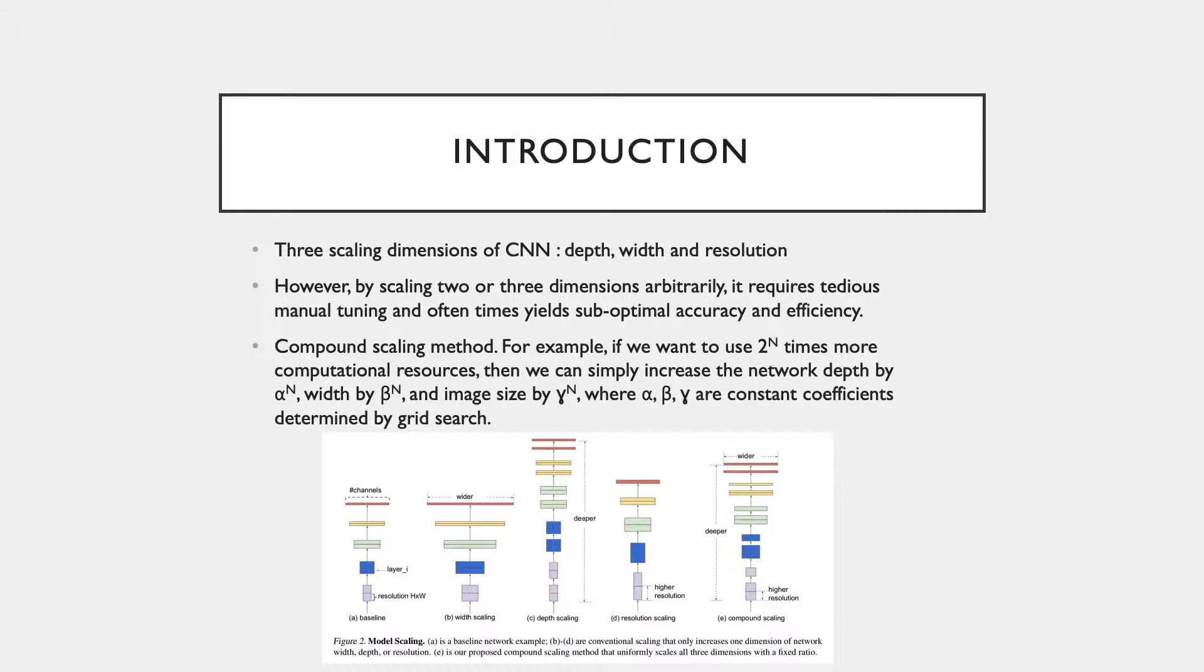So intuitively, if the input image is bigger, then the network would need more layers to increase the receptive field and more channels to capture more fine-grained patterns on a bigger image. For instance, if we want to use 2^N times more computational resources, then we can simply increase the network depth by alpha, the width by beta, and image size by gamma. All those constant coefficients can be determined by grid search.